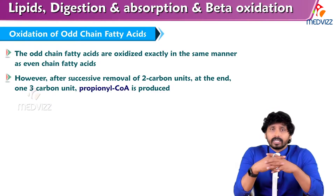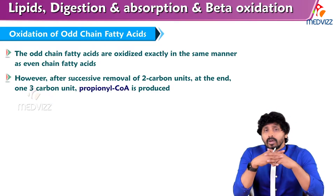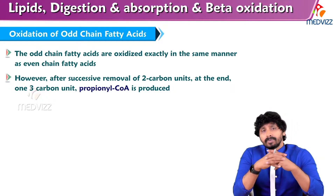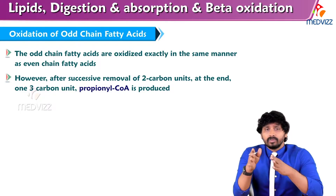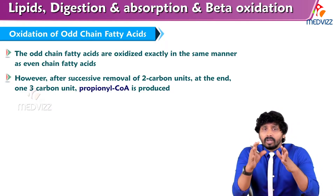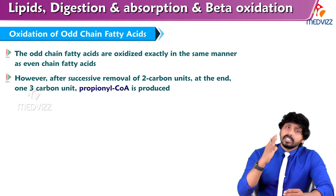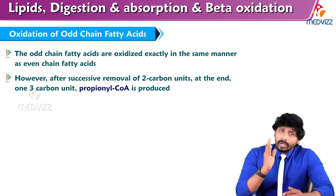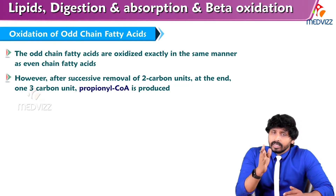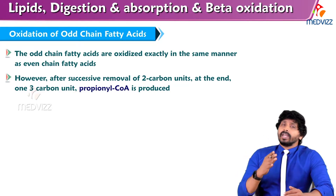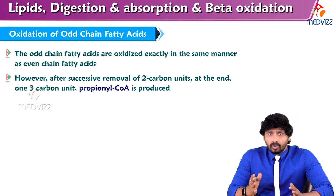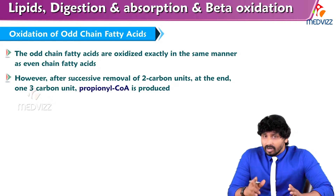Odd chain fatty acids do exist in our diet. How do we claim energy from those substances? There is a separate mechanism known as oxidation of odd chain fatty acids. These odd chain fatty acids undergo beta oxidation, similar to even chain fatty acids. But only at the last step, as in beta oxidation you would get one more acetyl-CoA because of the even number — in odd chain fatty acids, 3 carbons will remain.